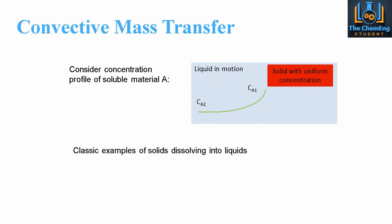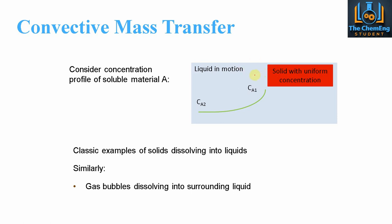Classic examples of this include dissolving sugar in tea or coffee — a solid material with uniform concentration dissolving in liquid. Similarly, we could have gas bubbles dissolving in a surrounding liquid, or a gas-liquid system, or volatile solids dispersing into surrounding gases. These general principles can be applied to a wide range of different examples.